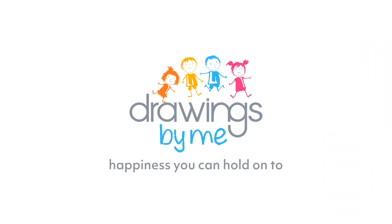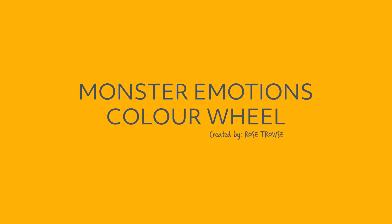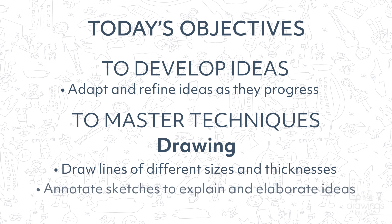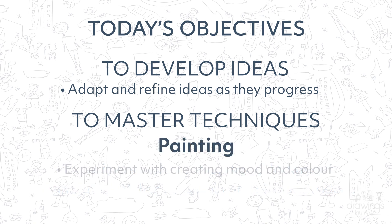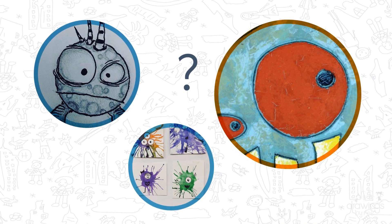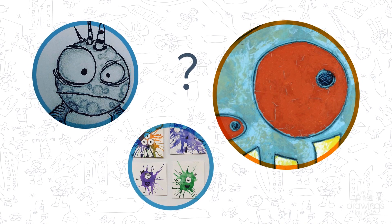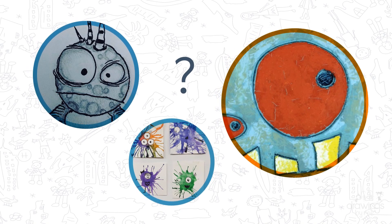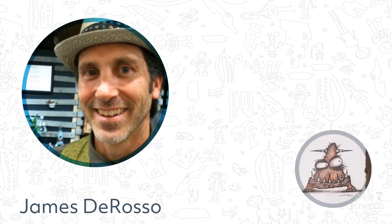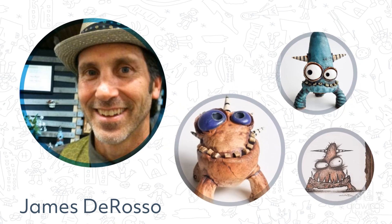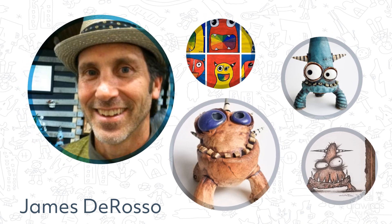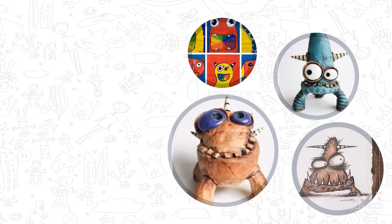Hello everyone and welcome to your Drawings by Me art tutorial. Today you will be creating a monster emotion color wheel painting. You'll be learning how to develop your ideas as you create your artwork, using thick and thin lines to draw and annotate your picture, and using watercolors to create a creature to show how you're feeling. We will be inspired by James De Rosso, who loves to draw, paint and create mini creatures and monsters. He especially loves to use clay to bring his designs to life. James De Rosso loved his art lessons at school and college and learned to create things using clay and ceramics. He started by making mugs and used to make little clay monsters to sit on top of his kiln, which is a giant oven. His friends loved the little monsters so much he eventually started to make more.